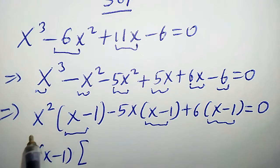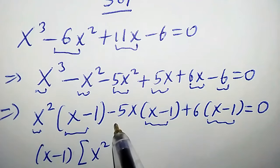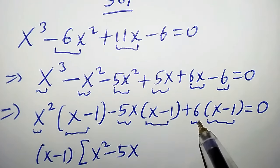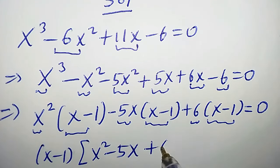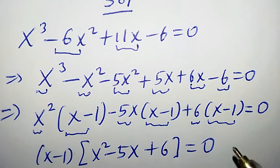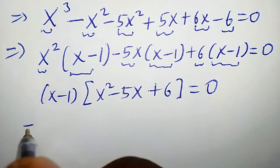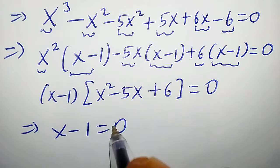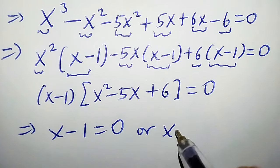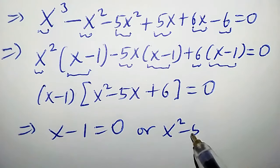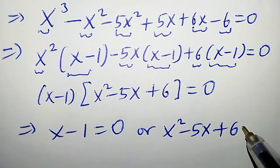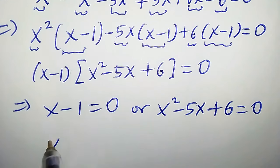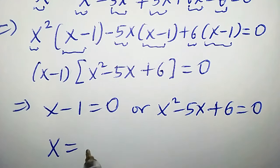We can pull out (x - 1), giving us (x - 1)(x² - 5x + 6) = 0. This implies that x - 1 = 0, or x² - 5x + 6 = 0. Clearly from the first factor, x = 1, which is our first solution.